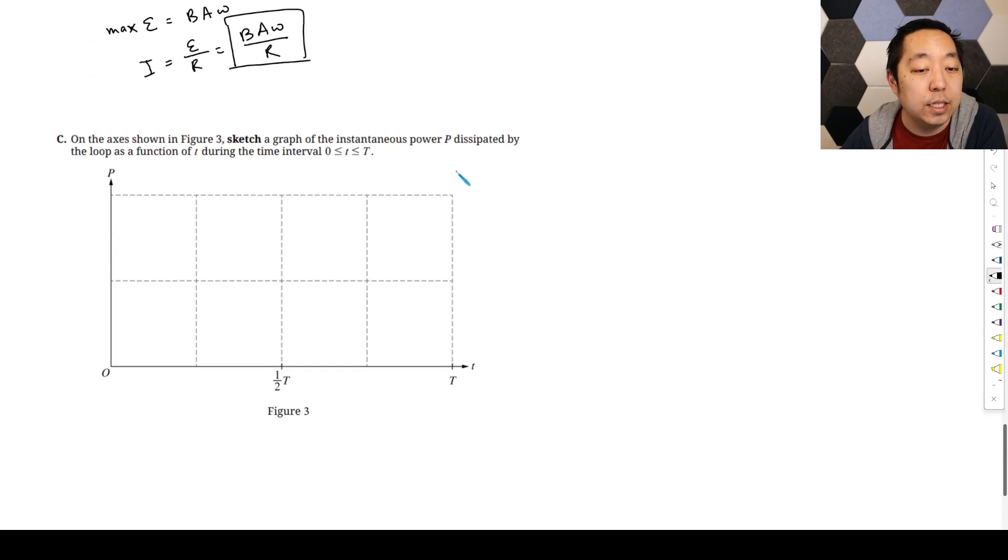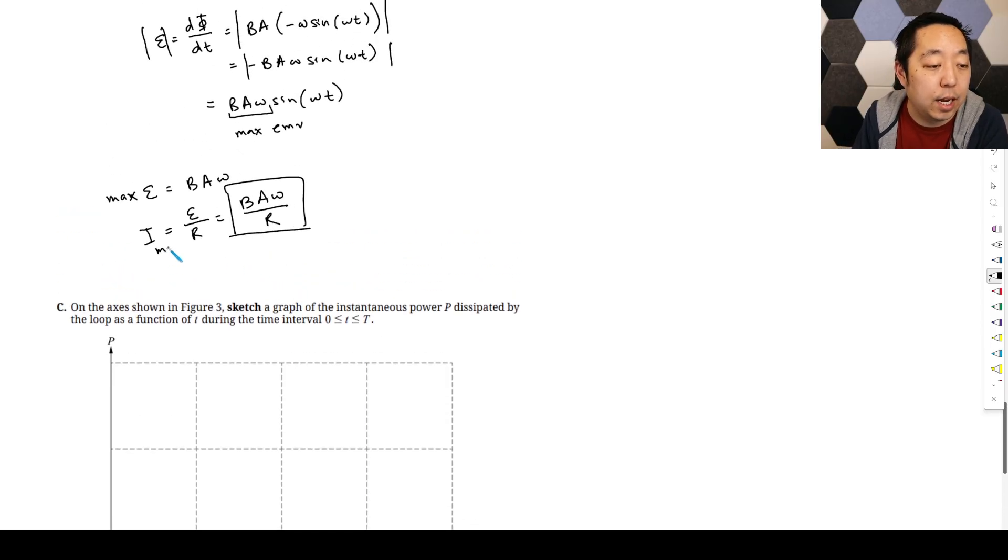On the axis, sketch a graph of the instantaneous power dissipated by the loop as a function of T during the interval. So the power in the circuit is just going to be I times V. The current here, BA omega over R—the I, sorry, the I max is this. This is not I.